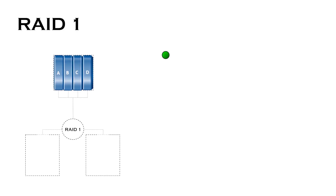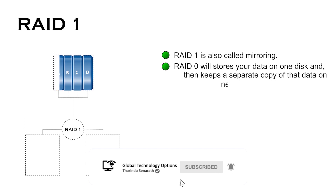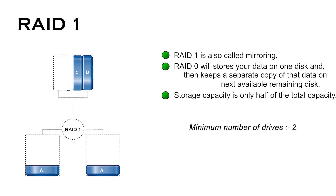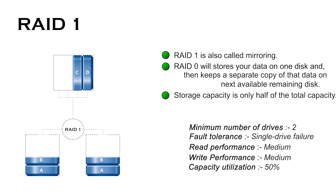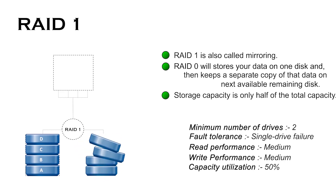RAID 1 is also called mirroring, as the same data is mirrored across two disks. If you have a two-disk array, it stores your data on one disk and then keeps a separate copy of that data on the next available remaining disk. Both disks store exactly the same data at the same time and at all times. In RAID 1, the effective storage capacity is only half of the total drive capacity, because all data gets written twice. If one disk goes down, your data is still accessible.